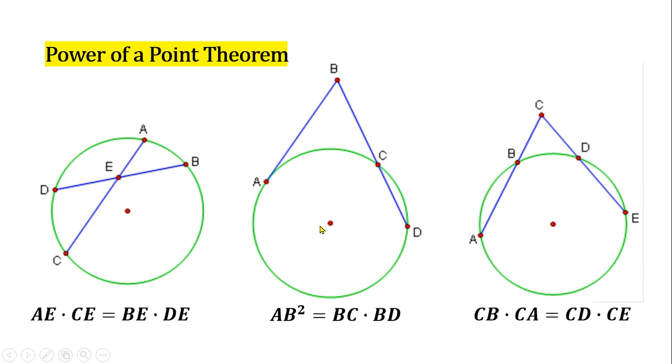For the second case, we have a tangent and a secant. Suppose the tangent is BA intersecting the circle at point A, and the secant is BD intersecting the circle at points C and D. From this case, we can derive the equation AB squared equals BC times BD.